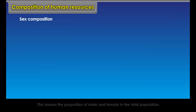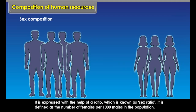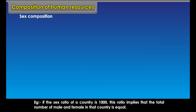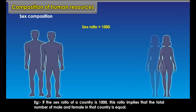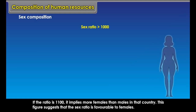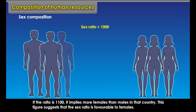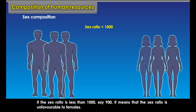Sex composition means the proportion of male and female in the total population. It is expressed with the help of a ratio known as the sex ratio, defined as the number of females per thousand males in the population. If the sex ratio is 1000, male and female are equal. If it is 1100, there are more females than males — favourable to females. If it is less than 1000, say 900, it is unfavourable to females.